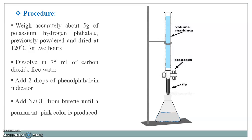Add sodium hydroxide from the burette to the conical flask until there is formation of a permanent pink color — this is the end point. You have to take 3 readings and then calculate the average. Suppose you get a burette reading of 24 ml; this reading is used for further calculations.